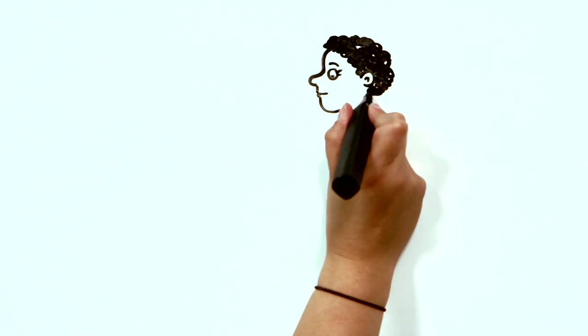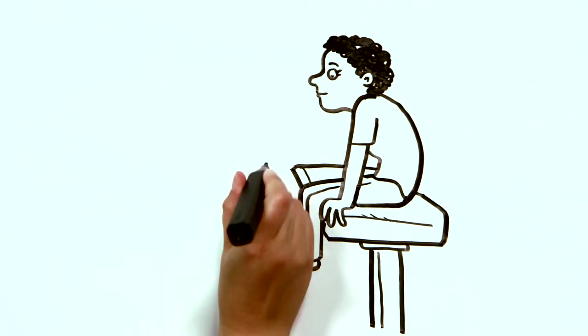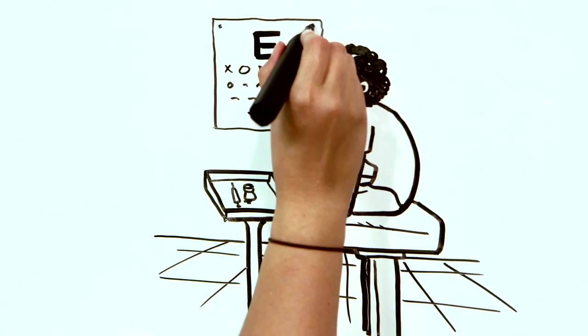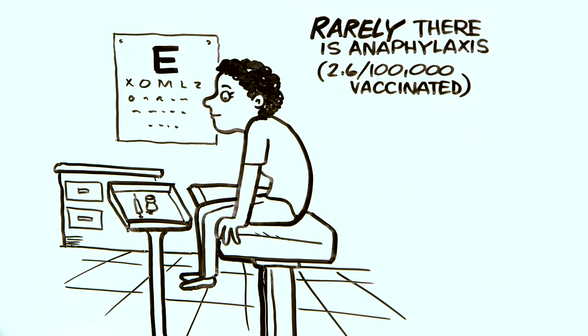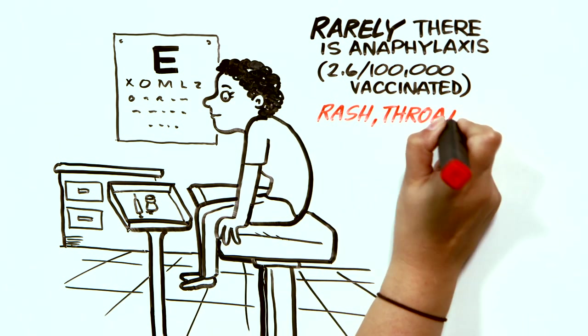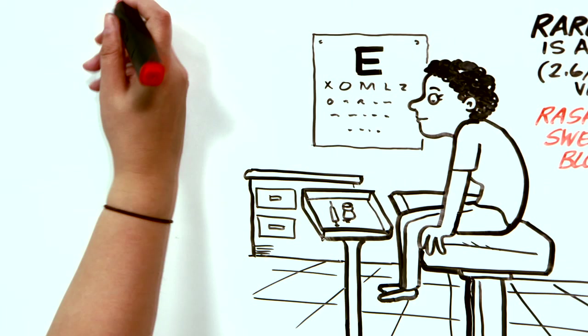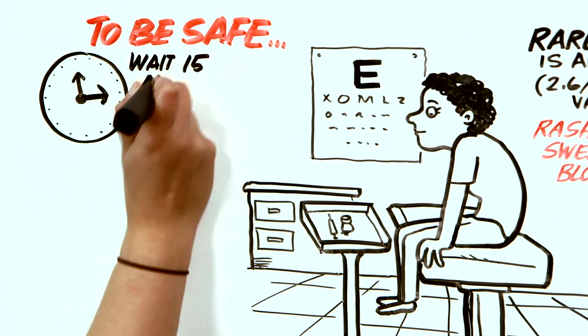There is one exception, as one Australian review signaled a higher rate of anaphylaxis than we have typically seen, about 2.6 per 100,000 people vaccinated. Anaphylaxis can be treated, but it's a serious allergic reaction that leads to rash, throat swelling, and low blood pressure. This rate is extremely rare, but it's being followed up now.